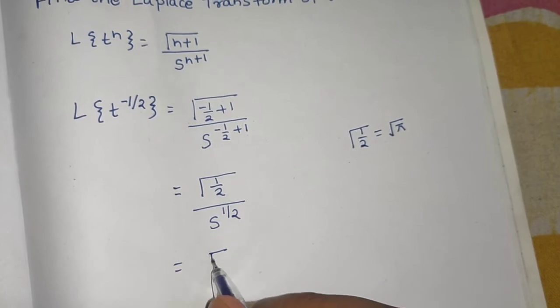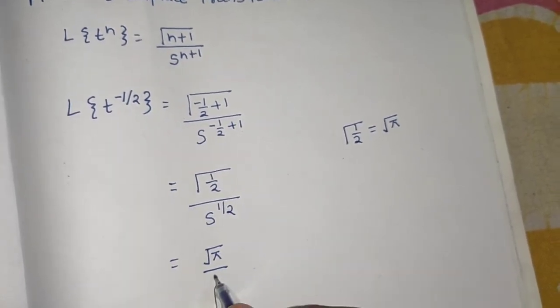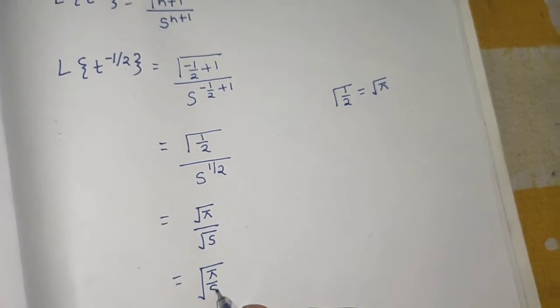So in numerator you have root pi and s raised to power half can be written as root s. So you may write your final answer as root pi by root s.